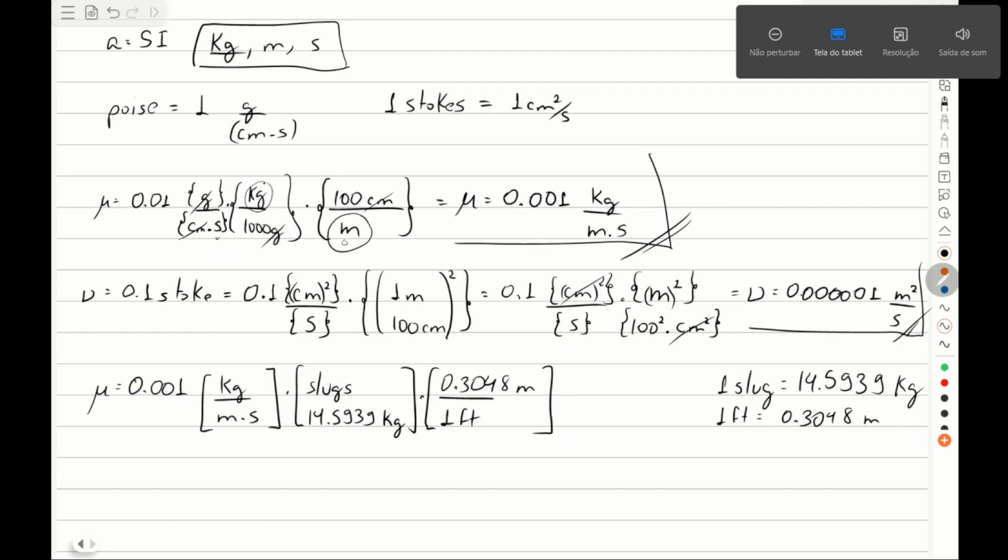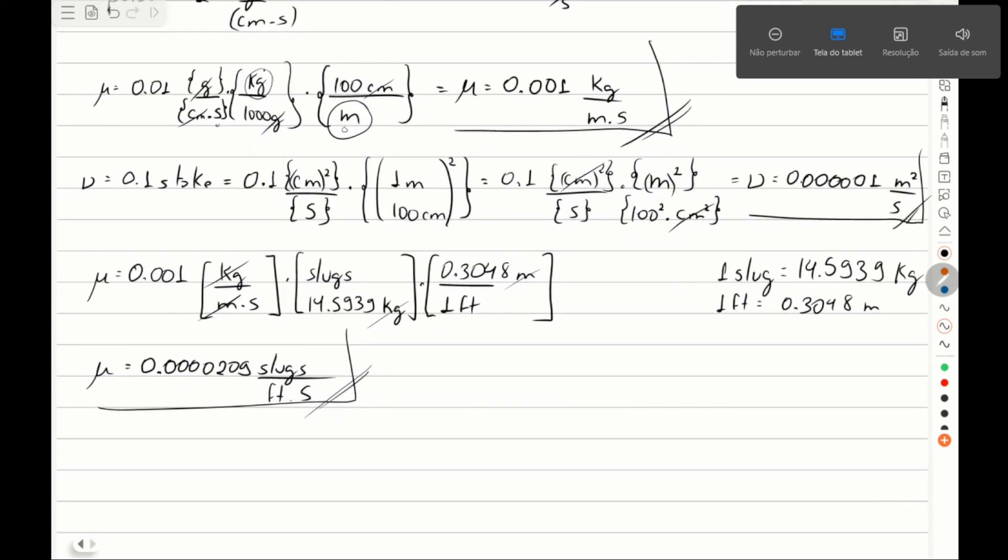So the result in the British system will be 0.000000209 slugs per foot second for absolute viscosity.